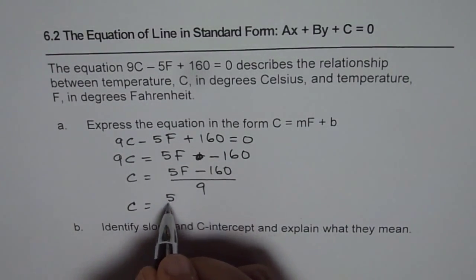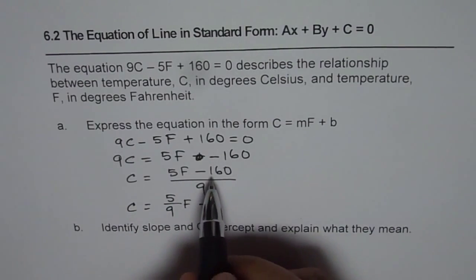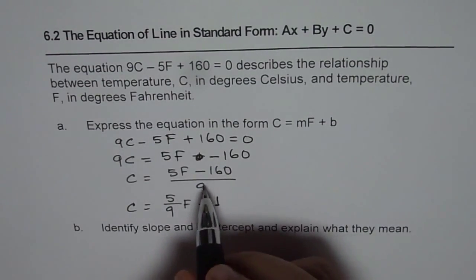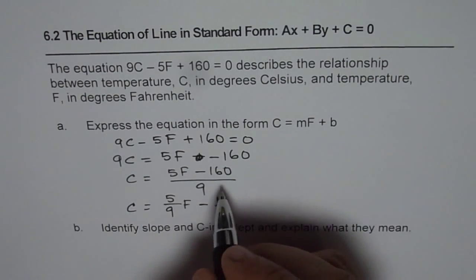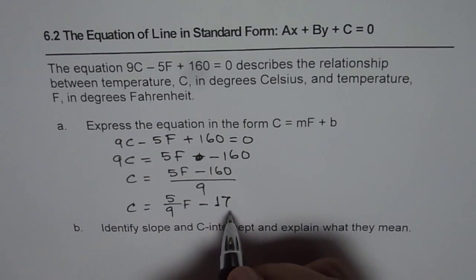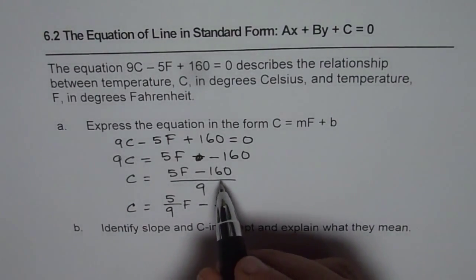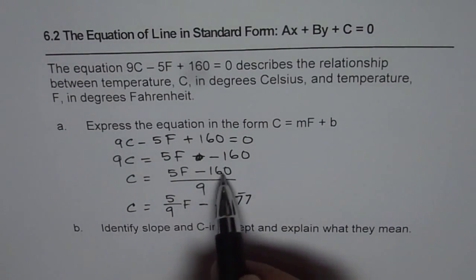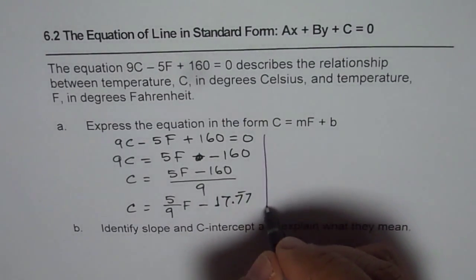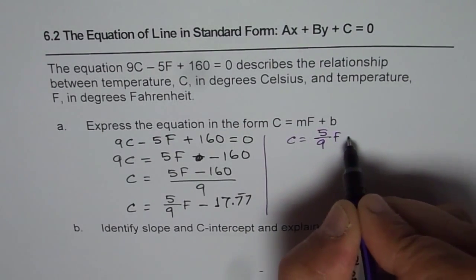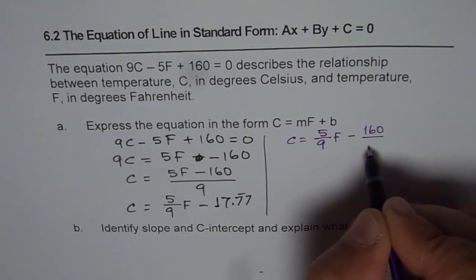We can write this as C equals 5 over 9 times F minus 160 over 9. If we divide 160 by 9 in decimal form, we get approximately 17.7 recurring, so it is better to keep it as a fraction. The final form is C equals 5 over 9 F minus 160 over 9.